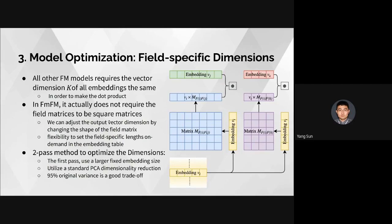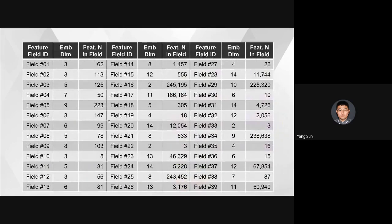We give an example on the Criteo dataset, which contains 39 fields. The optimized dimensions range from 2 to 14, and most are lower than 10 — lower than the typical factorization machine setting of 10 or 15. For example, field 10 has only 8 features and can be represented with just 3 dimensions, while field 25 has 214,300 entries and uses 8 dimensions to represent its information.